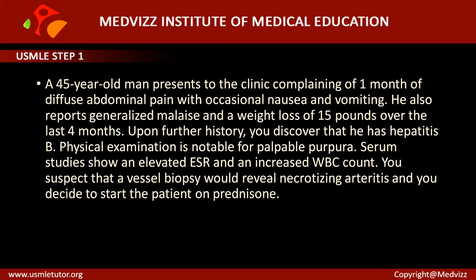He also reports generalized malaise and a weight loss of 15 pounds over the last four months. Upon further history, you discover that he has a previous history of Hepatitis B. The present complaint is abdominal pain of one month associated with nausea, vomiting, generalized malaise, and weight loss.